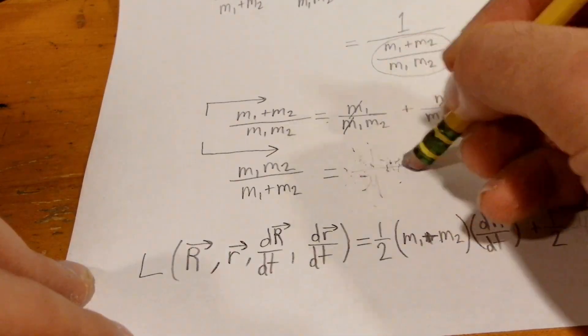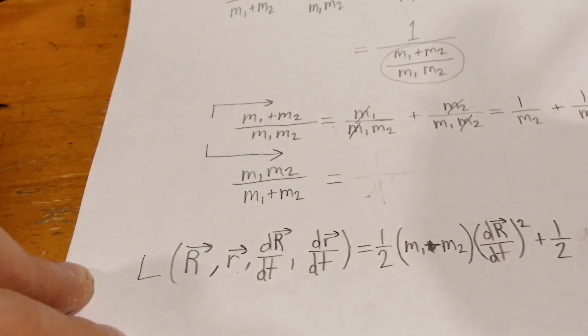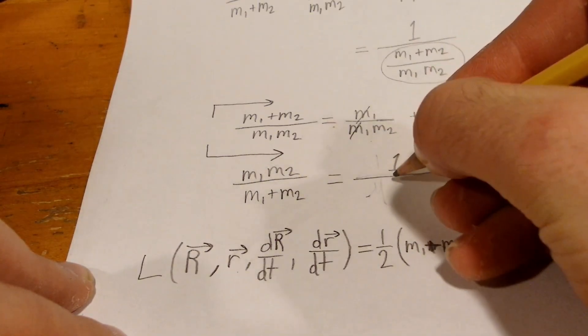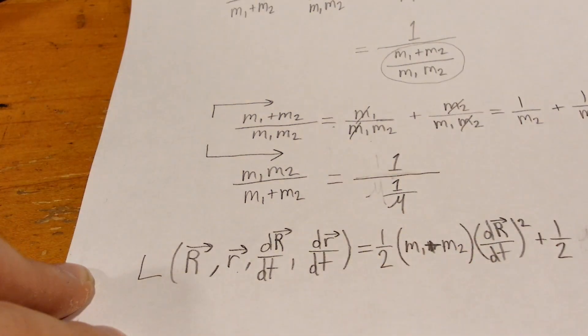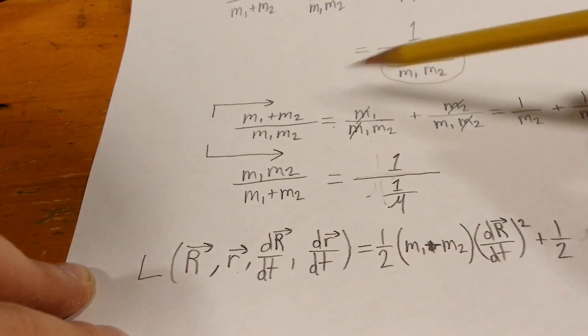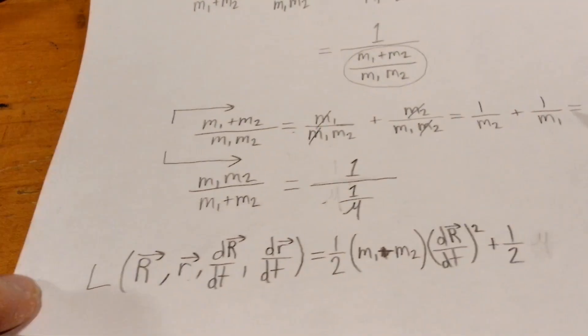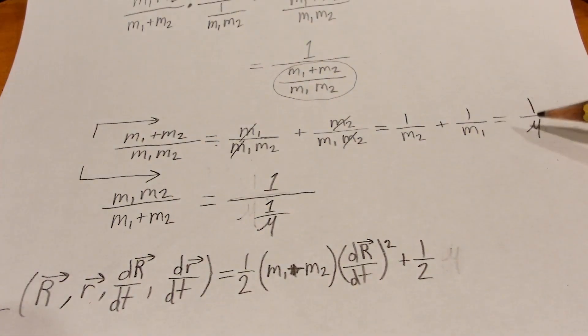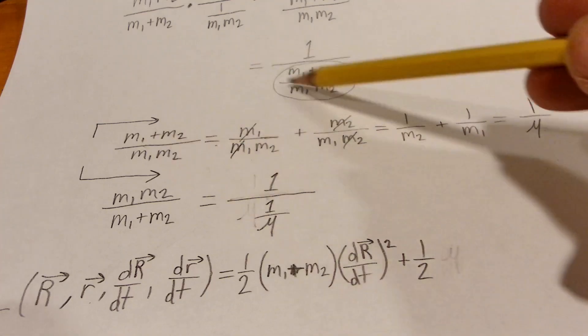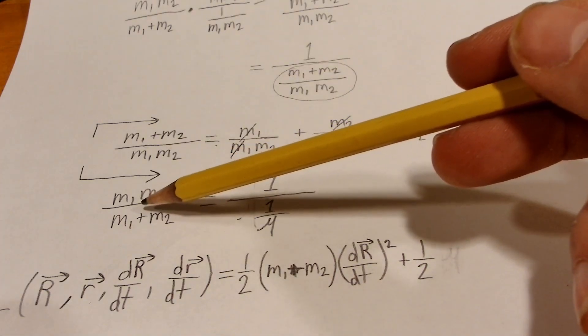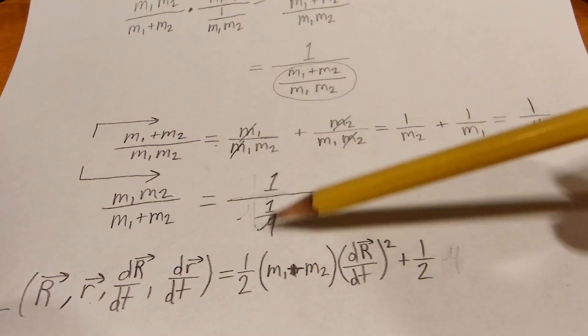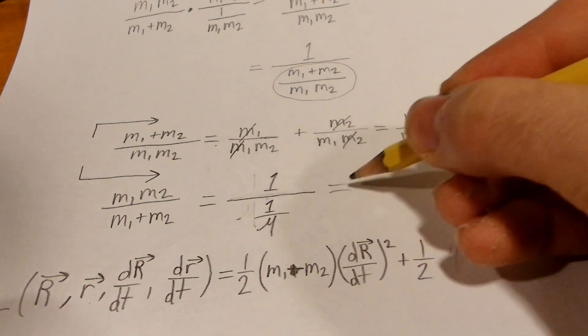I did make a little mistake here. This should be 1 over 1 over mu. So here I'm plugging in, this here is equal to 1 over mu. So I'm going to plug it back into the original equation. This will be 1 over 1 over mu which is equal to mu.